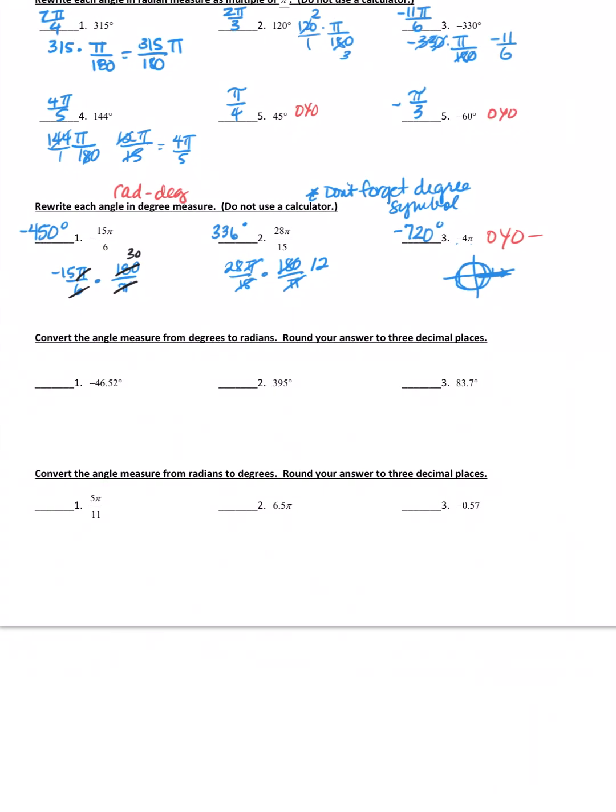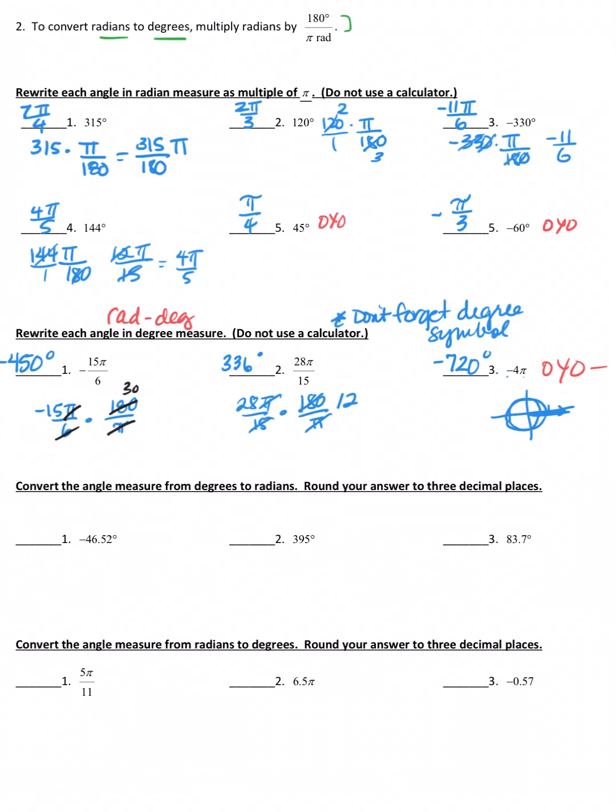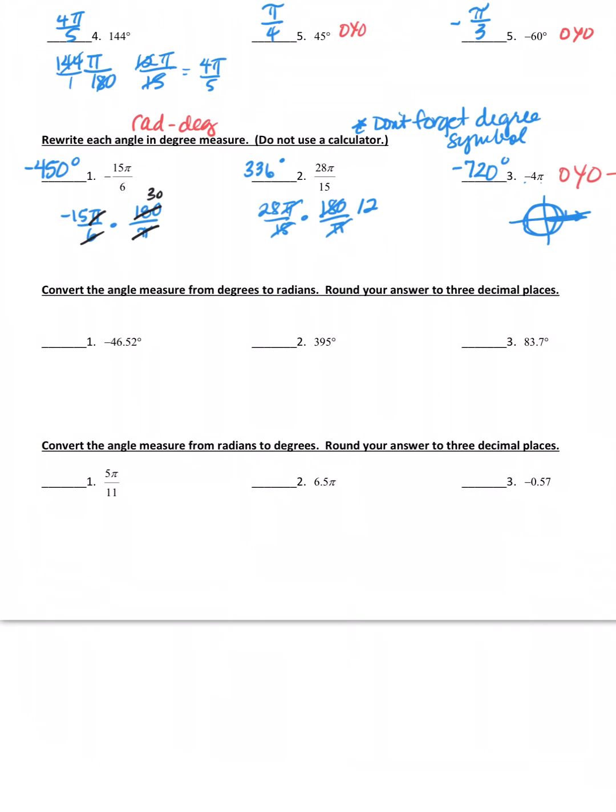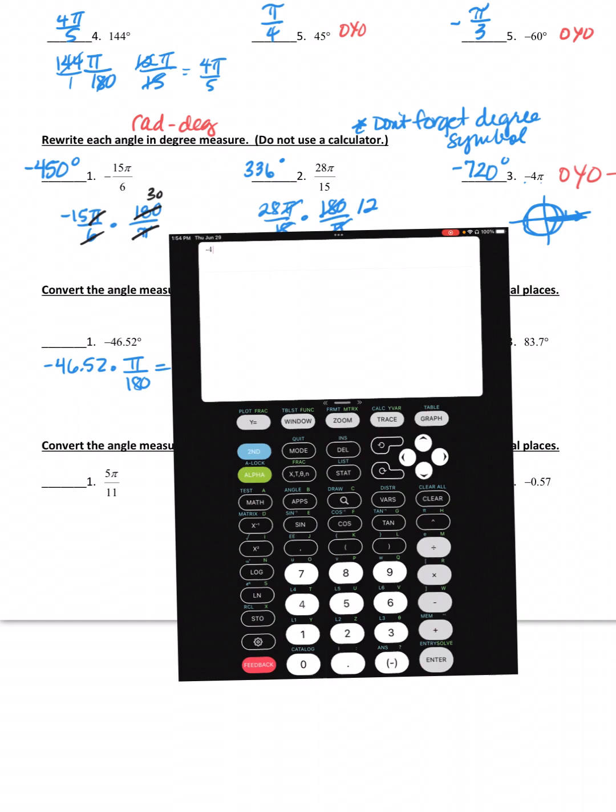Convert the angle measures from degrees to radian. Round your answer to three decimal places this time. Now these are decimals already, so we're going to definitely want to use our calculator on these. Negative 46.52 times pi over 180. You are going to use your calculator to multiply by pi and get your answer. So to convert, I would do negative 46.52 times, and I put in my conversion factor.